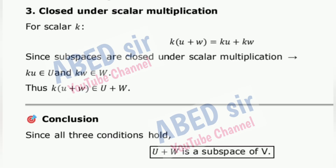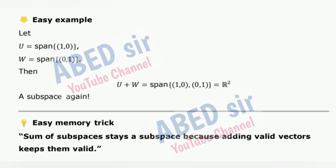Closed under scalar multiplication: for scalar k, k(U + W) = kU + kW. Since subspaces are closed under scalar multiplication, kU is in U and kW is in W. Thus k(U + W) is in U + W. Conclusion: since all three conditions hold, U + W is a subspace of V. Easy example: let U = span{(1,0)}, W = span{(0,1)}, then U + W = span{(1,0),(0,1)} = R². Easy memory trick: sum of subspaces stays a subspace because adding valid vectors keeps them valid.